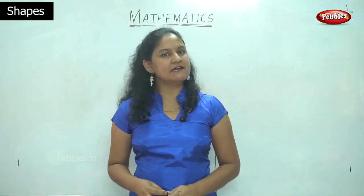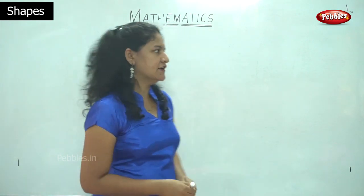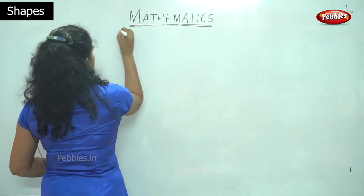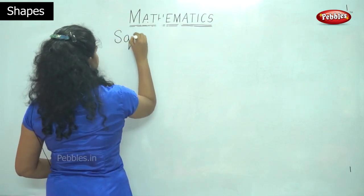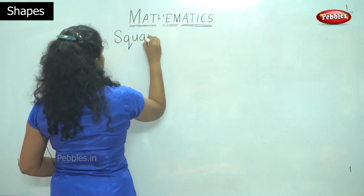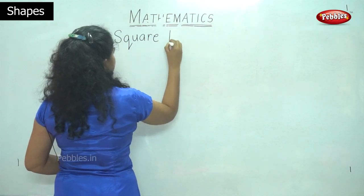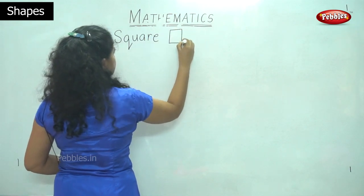So we have already learned different shapes like the square. We have learned about a square. This is a square which has all the four sides equal.